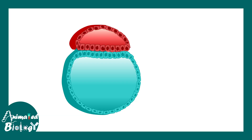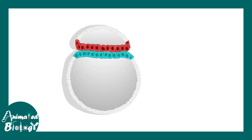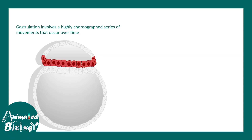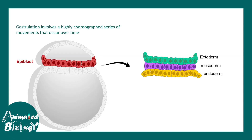Now let's look at the embryo in 3D. Here in red you can see the epiblast, which would eventually give rise to the embryo, and here is the hypoblast, which would give rise to the yolk sac. There is an amniotic cavity between the epiblast cells and a yolk sac between the hypoblast cells. During the process of gastrulation, the bilaminar embryonic disc — composed of epiblast and hypoblast — ultimately gives rise to ectoderm, mesoderm, and endoderm.